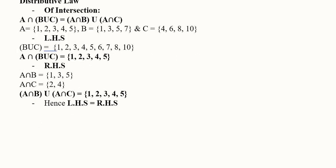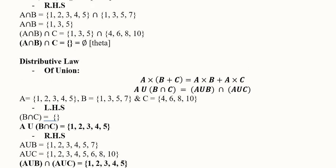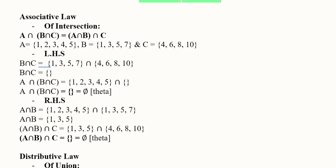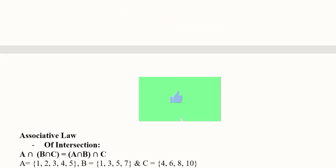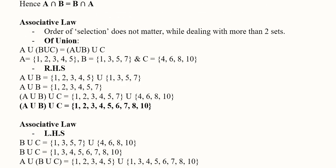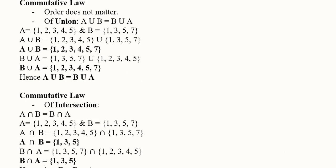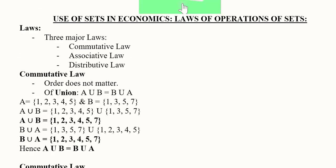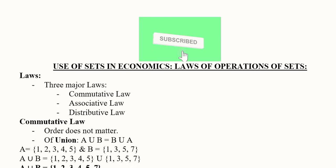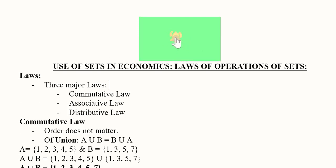So this proves the distributive law of intersection over union, the associative law of intersection and union, and the commutative law for both intersection and union. This is how we can understand the various laws of set operations that we use in mathematics as well as mathematical economics. Thank you.